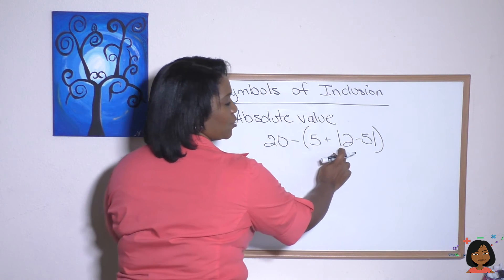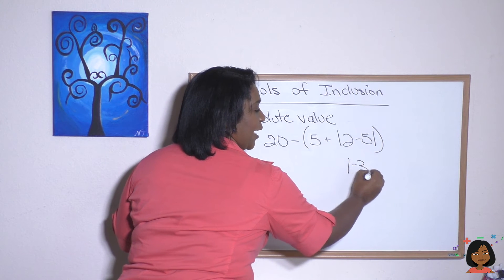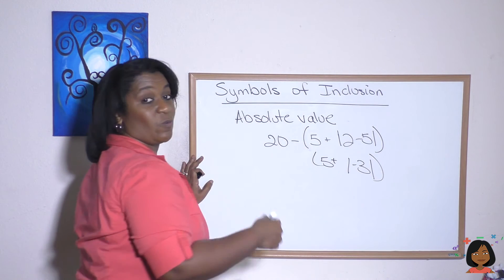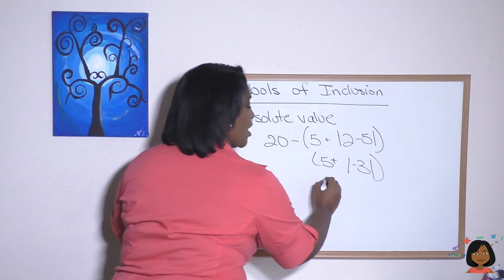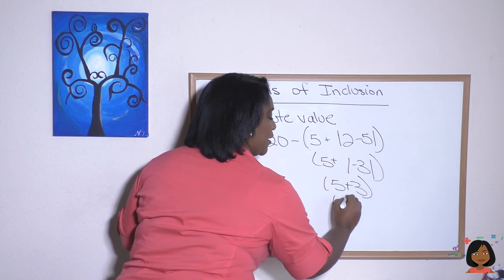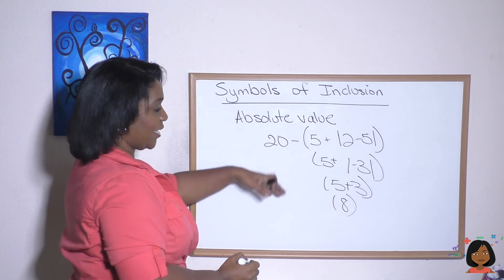2 minus 5, we know that's going to be a negative 3, but since it's absolute value, it's going to change to positive 3. So 5 plus 3, which we know is 8. Now let's work everything out here: we've got 20 minus 8. Our answer is 12.